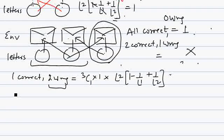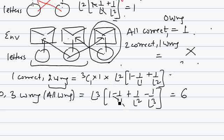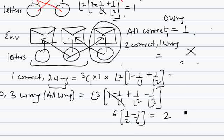The third case is all 3 wrong — 0 correct, 3 wrong. All wrong means we apply the derangement theorem: 3 factorial times (1 minus 1 by 1 factorial plus 1 by 2 factorial minus 1 by 3 factorial). On simplification the answer is 6 times (1/2 minus 1/6), which gives 6 times (1/3) — the answer is 2. So all 3 letters going to wrong envelopes can happen in 2 ways.